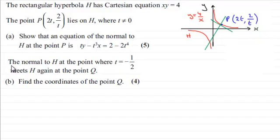And now we're being told that the normal to H at the point where t equals minus a half meets H again at the point Q. And we've got to find the coordinates of the point Q for 4 marks. So if you'd like to have a go at this, just give you a moment then to pause the video.